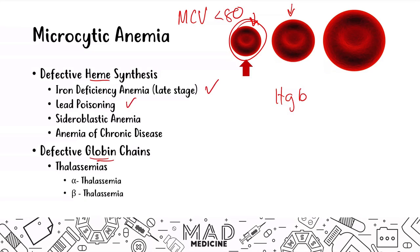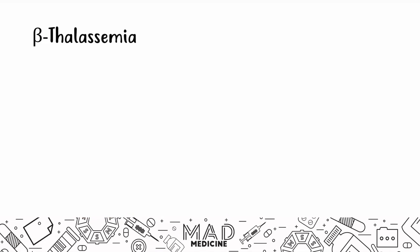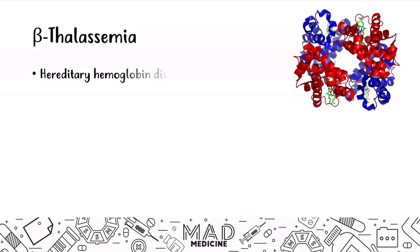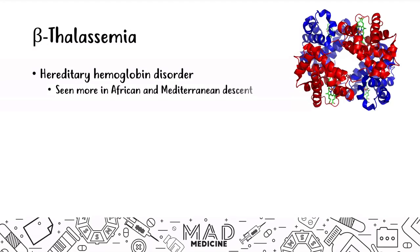Now we are going to be talking about beta thalassemia. Beta thalassemia deals with the beta globin chain specifically, and that's something you definitely need to know. Beta thalassemia is a hereditary hemoglobin disorder, and in Step 1, most of these patients are going to present from Africa or from the Mediterranean area — that is what you're going to see on the vignette.